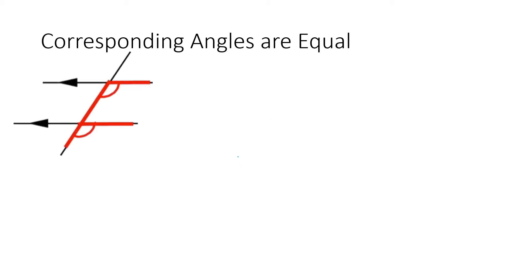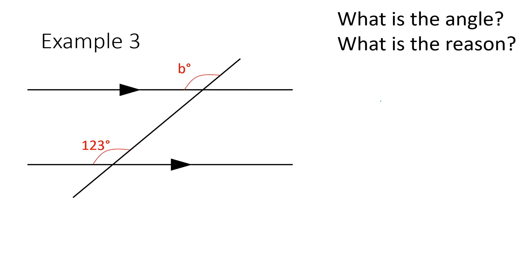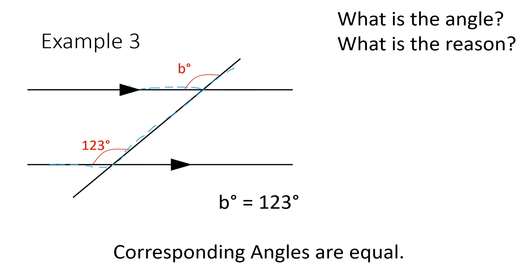Here are a couple more examples of how corresponding angles look. You can see a backwards F there with the angles in here equal to each other. It could be upside down, or upside down and flipped. These angles are always going to be equal if you're able to draw an F along your parallel lines. In this example, you can draw an upside-down flipped F, so B is equal to 123 degrees. The reason is because it's a corresponding angle and they are equal.